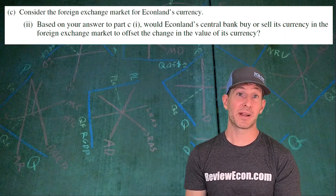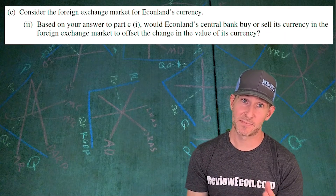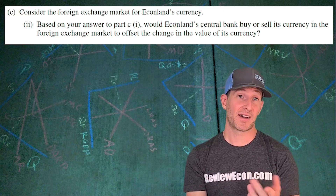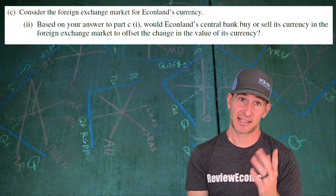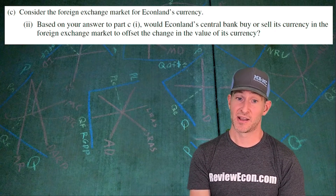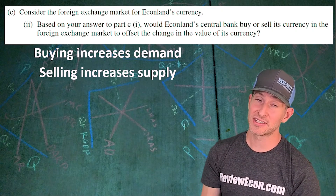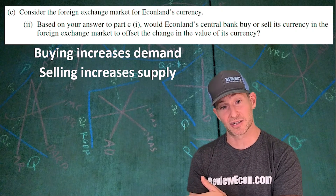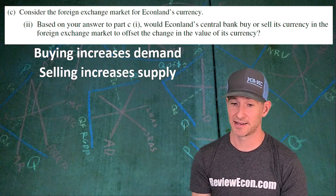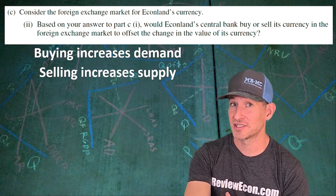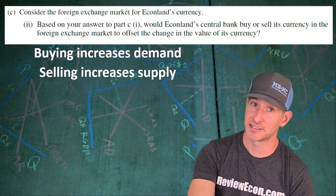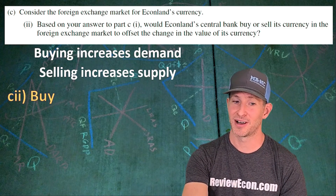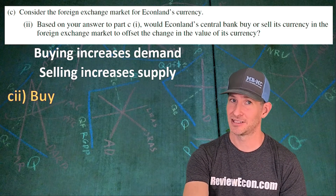For Part C-II, we have to base our answer on the depreciated currency we just talked about. We have to identify the action the central bank could take to keep the currency from depreciating. They could either buy currency — which would increase the demand — or sell currency, which would increase the supply. Buying bonds. Just identify it like that and you've got your point.